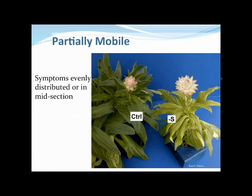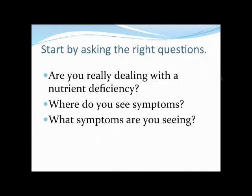Here's an example of a partially mobile element: sulfur. You can see this plant on the right has just an overall chlorotic look to it, and those symptoms all came together at the same time throughout the whole plant.